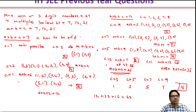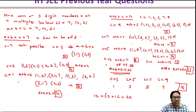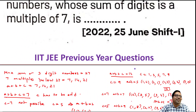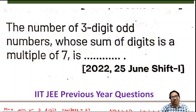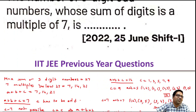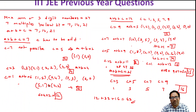So what are the total possibilities? Total number of three-digit odd numbers is 16 plus 35 plus 12, which equals 63. We have 63 three-digit odd numbers such that the sum of all digits is a multiple of 7.